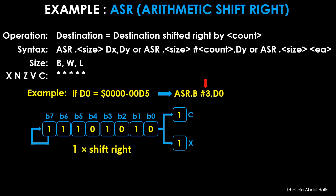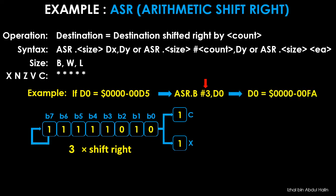At the end of the second shift, D0 contains 11110101 0, and the C and X flags are both 0. The third and final shift results in D0 equals 11111101 0, and the C and X flags are both 1. Thus the 32-bit hexadecimal value in D0 is 0x000000FA, and the status register is 110001.